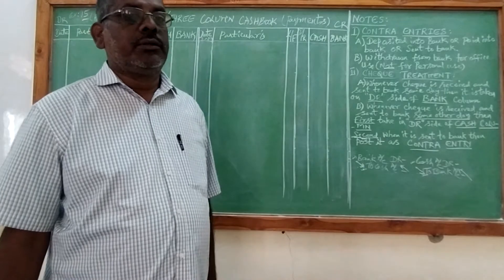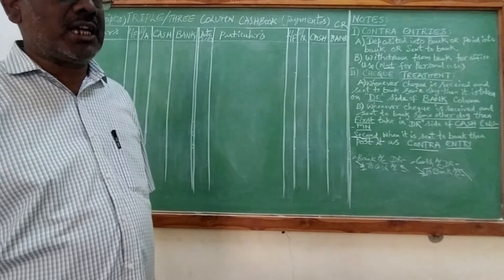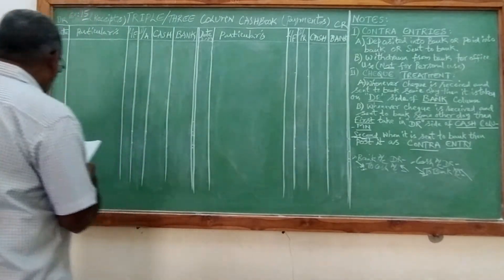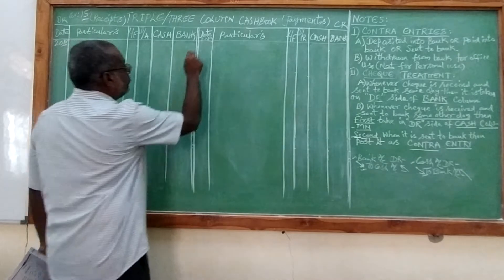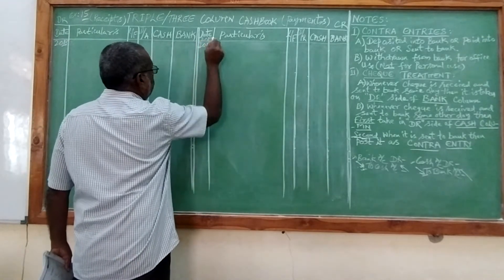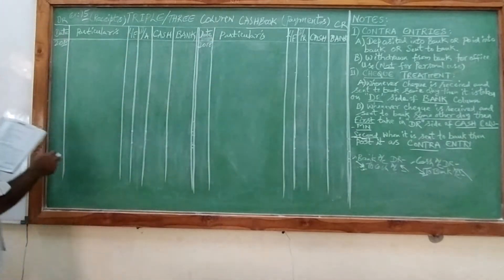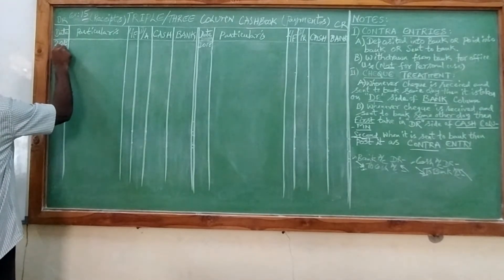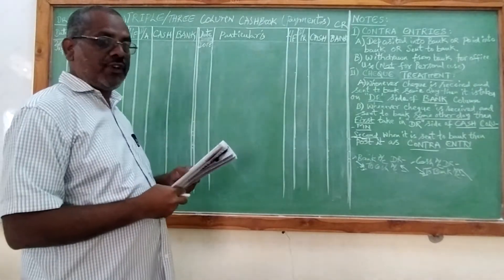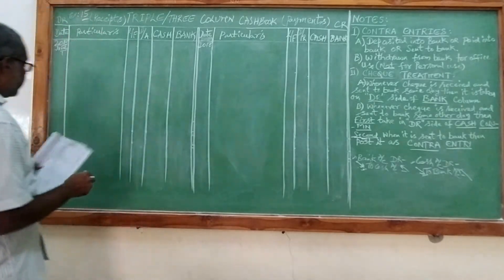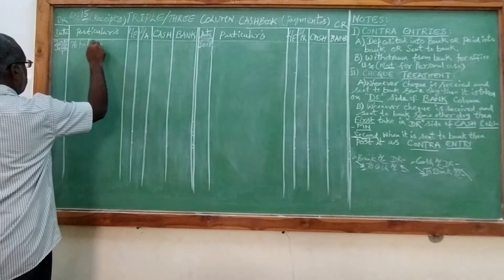Now I'll be starting Problem Number 15 from the Telugu Academy textbook, triple column or three column cash book. For 2018, June 1st, opening balance of cash is 500, cash bank is 40,800. I'll lay on the debit side as opening balances — balance brought forward: 12,500 in the cash column and 14,800 in the bank column.